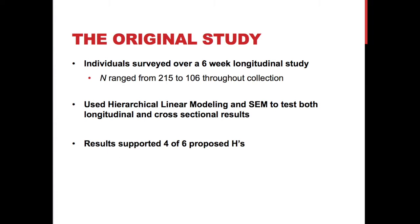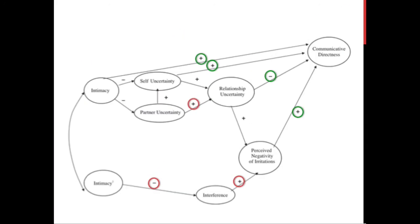Rather than bore you with a list of hypotheses, there were six hypotheses, and four of six were supported. Looking at the model, I've used green and red circles to illustrate which hypotheses were supported and which were not. We see that intimacy is positively related to communicative directness, self-uncertainty is positively related to communicative directness, relationship uncertainty is negatively related to communicative directness, and the perceived negativity of interactions was positively related to communicative directness.